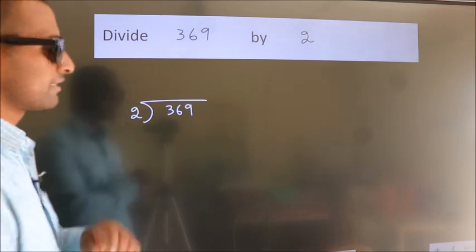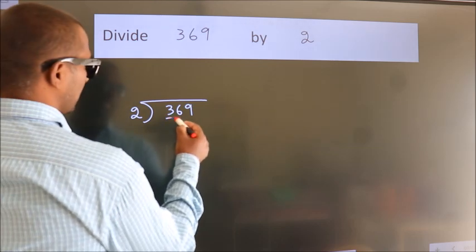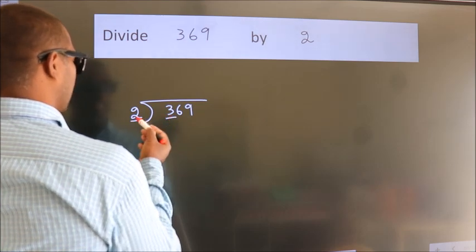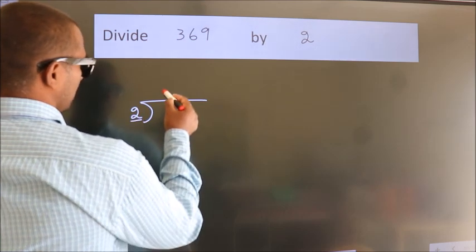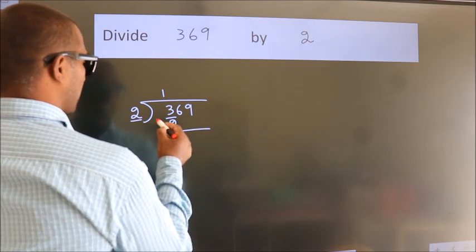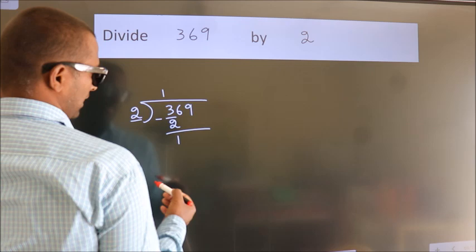Next, here we have 3, here 2. A number close to 3 in 2 table is 2 1s, 2. Now, we should subtract. We get 1.